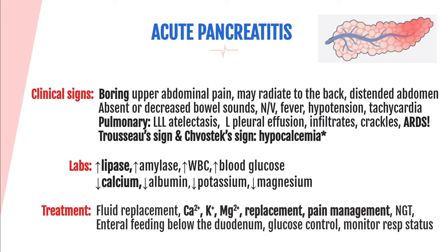Additional lab findings in acute pancreatitis include an elevated white blood cell count due to the SIRS response, high blood glucose due to injury of pancreatic beta cells, and hypocalcemia because calcium is used up for autodigestion and binds with fatty acids from necrotic fats. Low albumin results from leaky capillaries, and potassium and magnesium will also be low due to malabsorption. Treatment includes fluid replacement, but be careful not to worsen respiratory status if the patient already has crackles or ARDS.